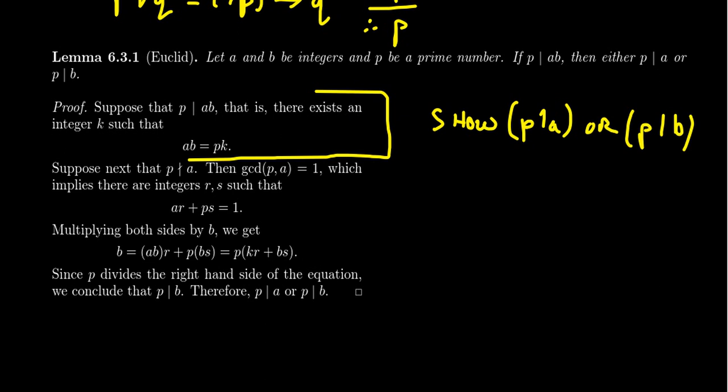To start off with, suppose that p divides ab, that is, there exists an integer k such that ab equals pk. So this right here is the hypothesis of the conditional statement. Now, what we have to do is we have to now show, given this assumption, we have to show that p divides a or p divides b. So we have to now prove a disjunction, an or statement. How do you show a disjunction? Well, if p divides a, we're done. If not, then we have to argue that p divides b. So suppose next that p doesn't divide a.